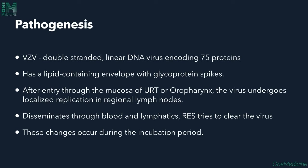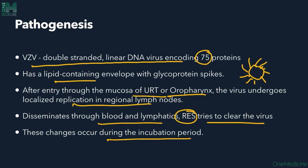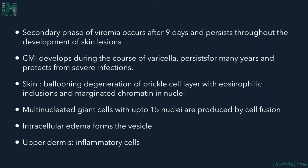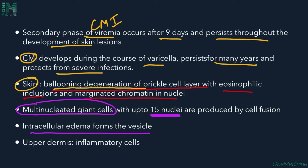Pathogenesis: VZV is a double-stranded DNA virus encoding around 75 proteins with a lipid envelope. After entry through the mucosa of the upper respiratory tract or pharynx, it undergoes localized replication in regional lymph nodes, then disseminates through blood and lymphatics. The reticuloendothelial system attempts to clear the virus. A second phase of viremia occurs 9 days after infection, persisting throughout skin lesion development. Cell-mediated immunity develops and persists for many years. In the skin, ballooning degeneration of the prickle cell layer with eosinophilic inclusions and marginated chromatin in nuclei is seen, along with multinucleated giant cells (up to 15 in number). Intracellular edema forms vesicles, and the upper dermis shows inflammatory cells.